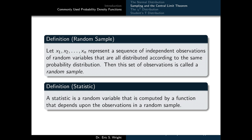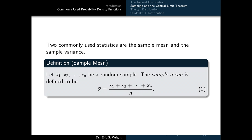We'll begin by defining a random sample. Let x1, x2, all the way up through xn represent a sequence of independent observations of a random variable, all distributed according to the same probability distribution. Then this set of observations is called a random sample. A statistic is a random variable computed by a function that depends upon the observations in the random sample. Two commonly used statistics are the sample mean and the sample variance. The sample mean x-bar is defined as the arithmetic mean of those observations — the sum of the values divided by the total number.